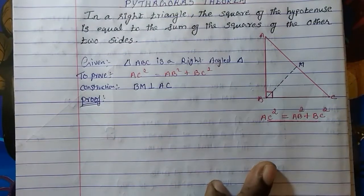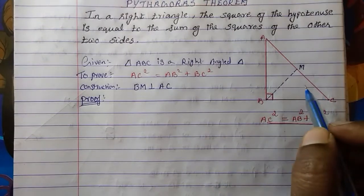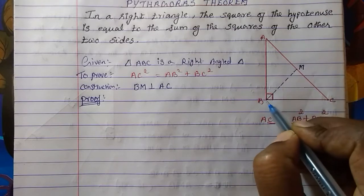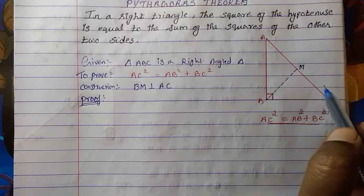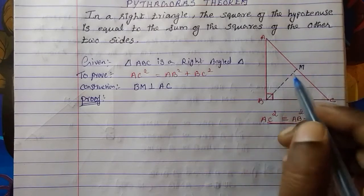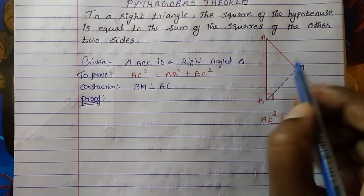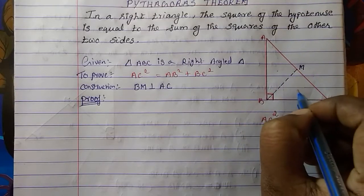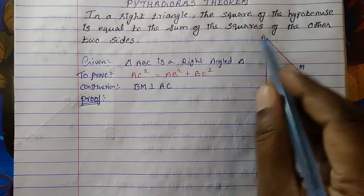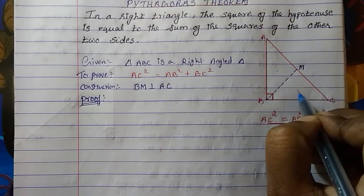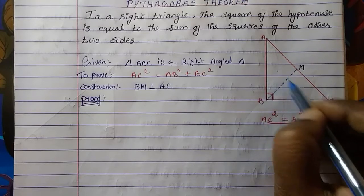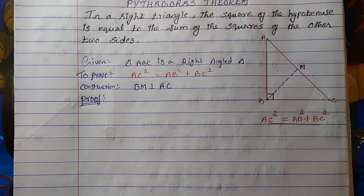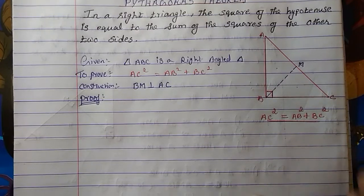Now to prove, we will refer to Theorem 6.7, where we already learned that in a right angle triangle, if the perpendicular is drawn to the hypotenuse, then two small triangles are formed. Triangle 1 will be similar to triangle ABC, triangle 2 also will be similar to triangle ABC, and both triangles 1 and 2 will also be similar to each other. That's what we studied in Theorem 6.7.